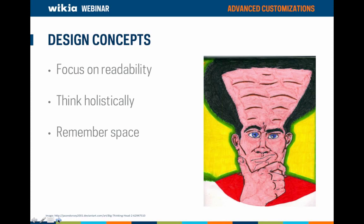Before diving into CSS, here are some basic design concepts to keep in mind. First, focus on readability — people come to your wiki to view content, and if they can't read it due to color contrast or spacing issues, they won't stay. Think holistically: consider each design element as part of a whole. Do the elements work well together? A wiki looks better when all design elements work together. Finally, remember space — padding and white space are your friends. If all that white space is taken over with design, it becomes hard to read and distracting.